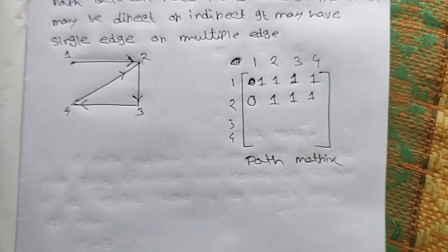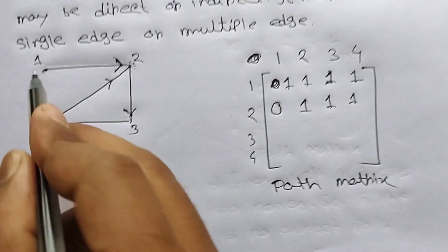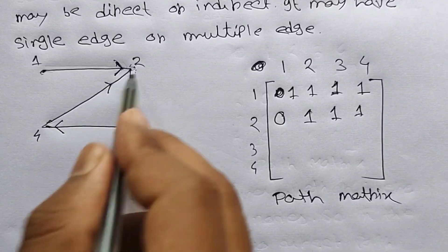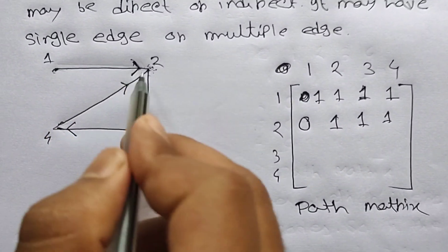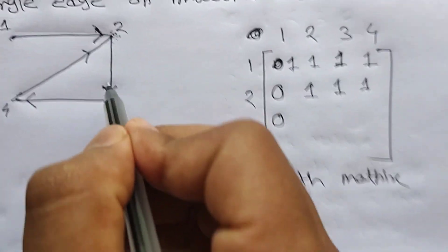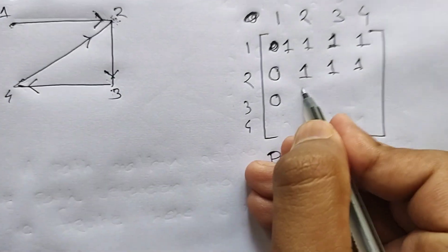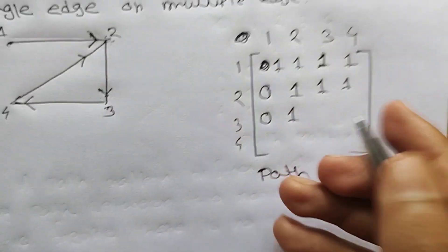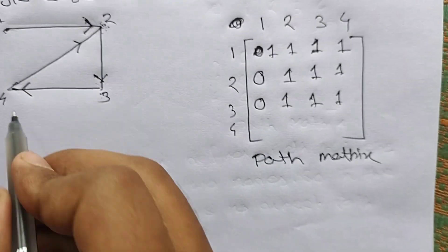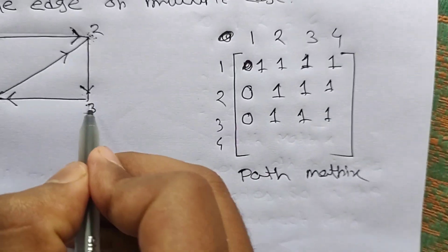3 to 1 — we can go 3→4→2 but 2 to 1 we cannot go, so 0. 3 to 2 — direction is 2 to 3 for that edge, but we can go 3→4→2, so put 1. 3 to 3 — put 1. 3 to 4 — there is a directed edge, so 1.